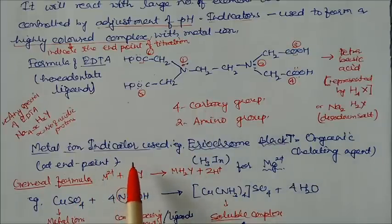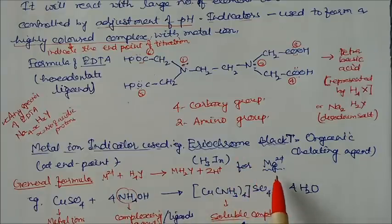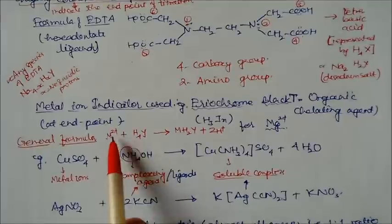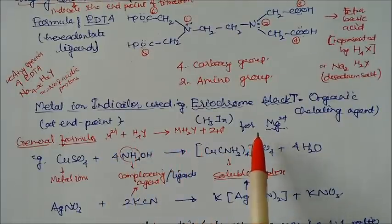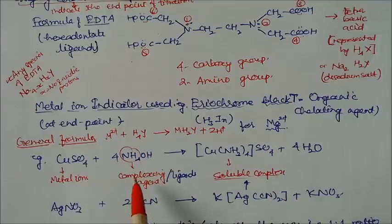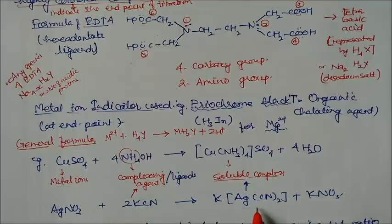The indicator used to identify metals is Eriochrome Black T, an organic chelating agent. At the end point it reacts, and it is used to identify magnesium metal ions. The general formula for the complex reaction is: metal plus complex agent forms a complex and acid is released. For example, copper sulfate with ammonium hydroxide as complex agent forms a colored complex soluble in water. Silver nitrate with potassium cyanide as complex agent also forms a water-soluble complex.